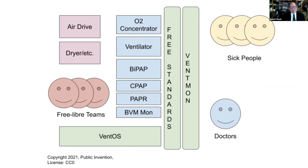This is a very simple schematic diagram. On the left you have an air drive. Polyvent is our air drive — it's a bellows-based air drive — but there is a different air drive inside Respiraworks and a different air drive inside OpenVent Bristol. You have to produce air. From that, you can make O2 concentrators, ventilators, BPAP machines, CPAP machines, PAPers, and even bag valve mask monitors. All of these have more in common than you might imagine.